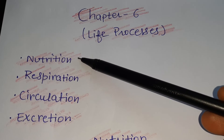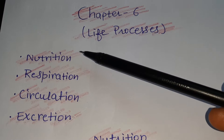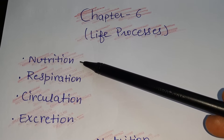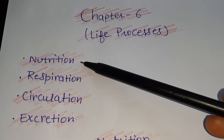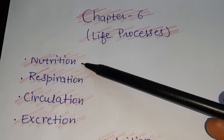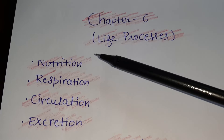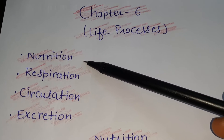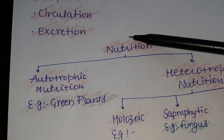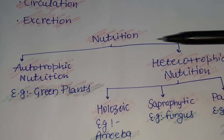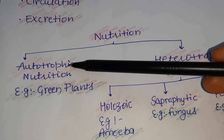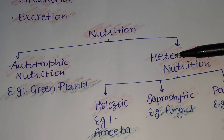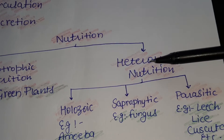We have already started discussing nutrition. First, you must know that nutrition is the process of obtaining food — either by preparing it itself or getting it from some other organisms — and utilizing it for getting energy. Under the topic of nutrition, we have already discussed its types and autotrophic nutrition in detail, as well as the difference between autotrophic and heterotrophic nutrition.